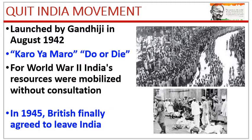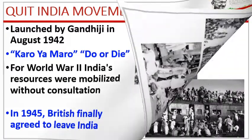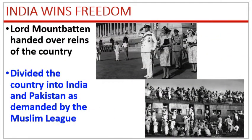the British finally agreed to leave India. Lord Mountbatten, the last Viceroy, handed over the reigns of the country, but divided it into India and Pakistan as demanded by the then Muslim leaders.